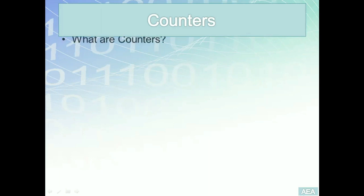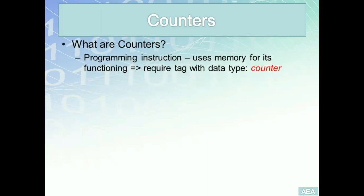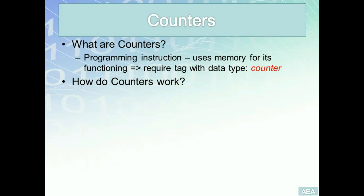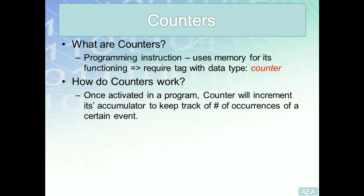Counters are programming instructions similar to timers — they use memory for their functioning. In order to use counters in our program, we have to create tags for them in our program tags, and the data type for these counters will simply be a counter. How do they work? Similar to timers, they are blocks. They exist to the right side of our rungs, so we treat them the same way we treat an output. Once this block is activated — if we have logic continuity across the rung that has the counter block as an output — the counter will increment its accumulator to keep track of the number of occurrences of a certain event.